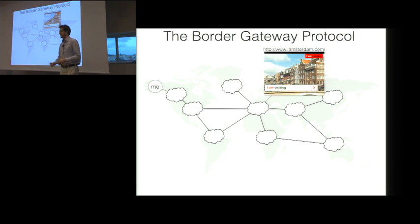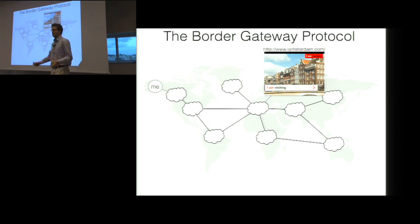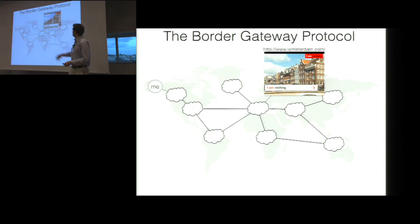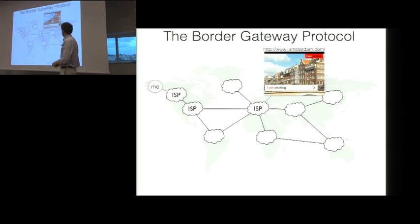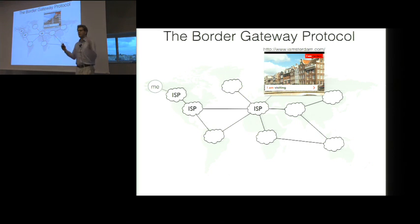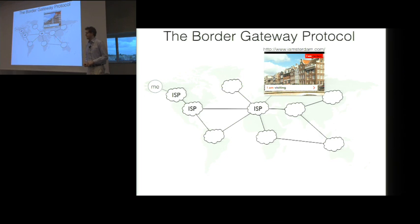Before I came here, I wanted to prepare myself about Amsterdam, so I went on the iAmsterdam website, and kind of magically this website appeared in my browser. But how does this actually work? To understand this, we first have to understand that the internet isn't just one big network. Instead, it's made up of smaller independent networks that are run by internet service providers, or ISPs.